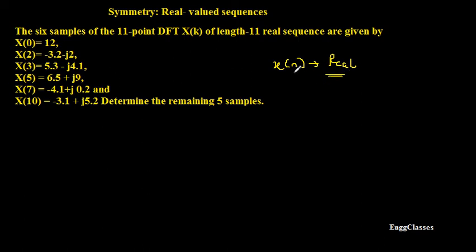X(n) is stated to be real — this point is important. I can make use of the property of symmetry if and only if X(n) is real. Now, normally if X(n) with 11 samples were given, I could find X(k) directly. But here X(n) is not given; only that it is real is stated. Still, the task is to find X(k), so we use the symmetry property.